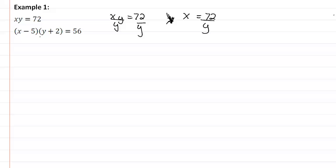So now it means in our second equation, we want to divide by the factor that has y in it also. So we're going to divide by y plus 2. And so now what we have is x minus 5 equals 56 over y plus 2.